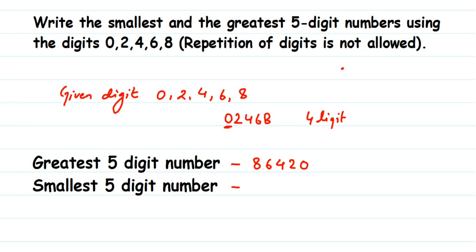If zero is placed at the beginning, it has no value. For example, 05 and 5 are the same — writing zero in front doesn't change the value. So in such a case, when you are forming a five-digit number and there is a zero among the digits, you need a different approach.